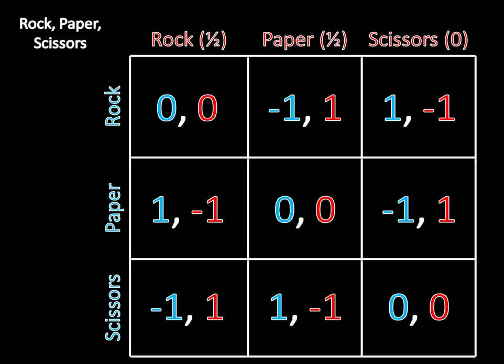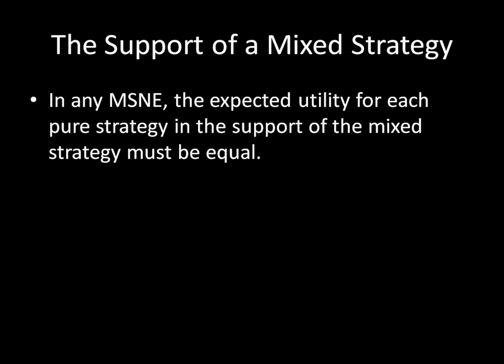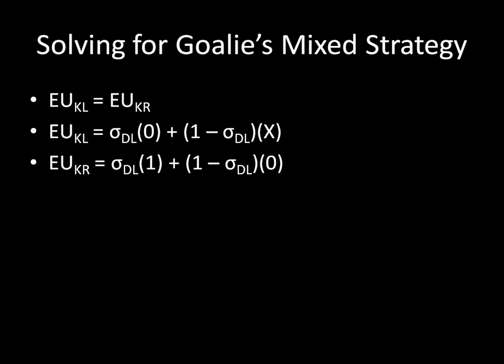Why do we care about the support of a mixed strategy? It's actually very important when looking at mixed strategy Nash equilibria. In any mixed strategy Nash equilibrium, the expected utility for each pure strategy in the support of the mixed strategy must be equal. We've been implicitly doing this all along when using the mixed strategy algorithm — setting expected utilities equal to one another to ensure this property holds, such as assuring the kicker's expected utility for kicking left equals that of kicking right.